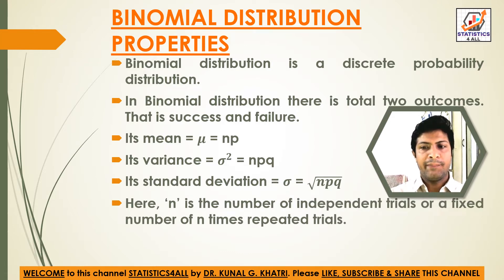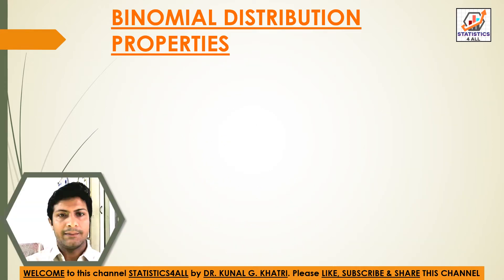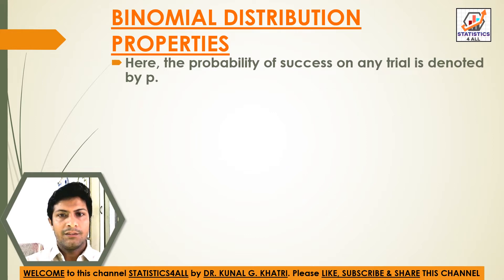Here, n is the number of independent trials, or a fixed number of n times repeated trials. Out of n independent trials, only the number of successes is calculated. The probability of success on any trial is denoted by p.